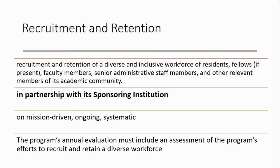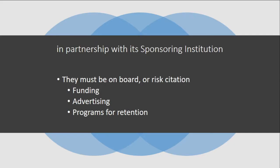The next requirement is that it's in partnership with the sponsoring institution — that means your institution has to help you get to where you want to go. Program directors aren't the ones who are going to be talking about faculty recruitment. The sponsoring institution needs to be the one motivating from this perspective, and what they need to be on board with is not just saying yes, we support diversity, but providing tangibles — resources, funding.